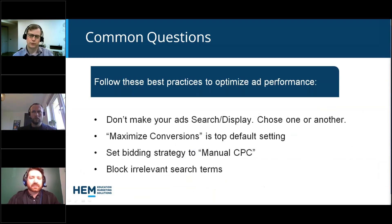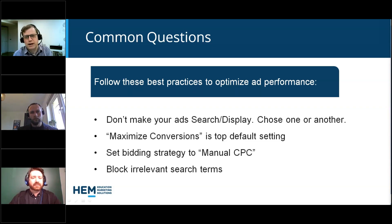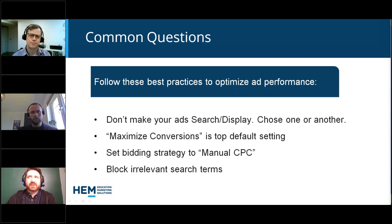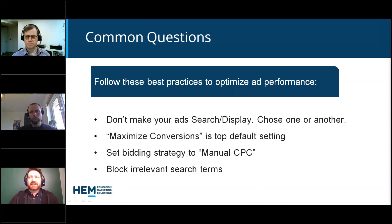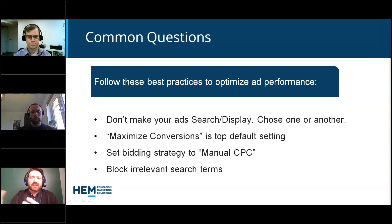Before we get to Q&A period, here are some best practices — the four core things to look for when measuring your ads. Best practice one: don't mix search and display campaigns together. Google has two different types of offerings — search campaigns, where people type things into the Google search bar and a text ad pops up, and display campaigns, which are the images you see on the side of websites that you click on. By default, Google encourages people to group them, but we would say don't do that — stick with one or the other.